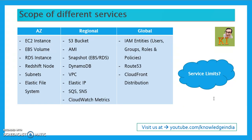It's important to understand service scope so you don't get confused. For example, if you are trying to access an AMI, it exists in one region and would not be accessible from the console of another region — you need to copy the AMI to the other region.